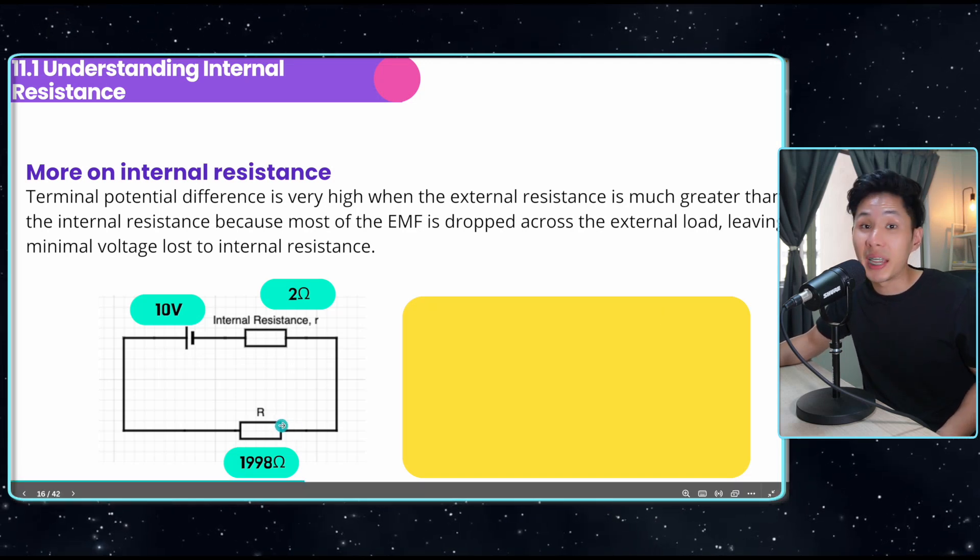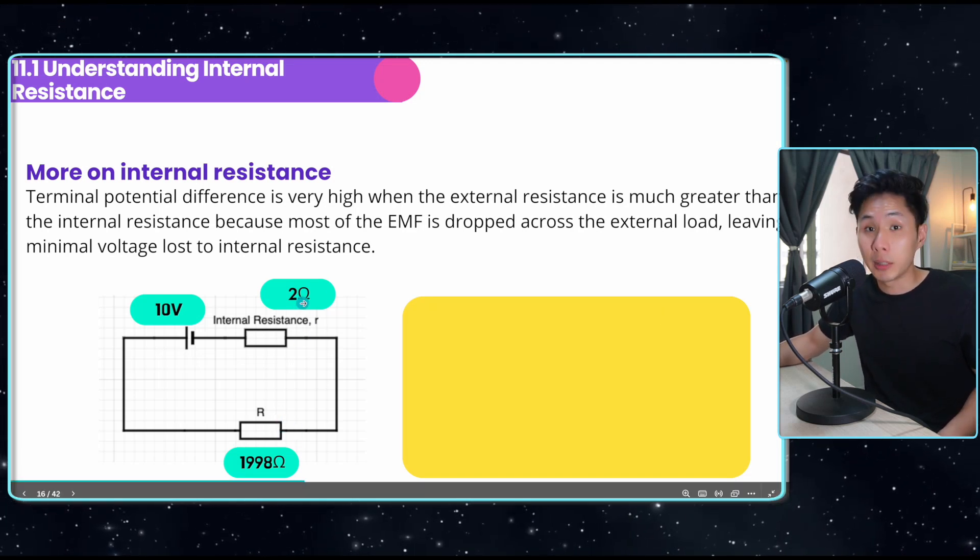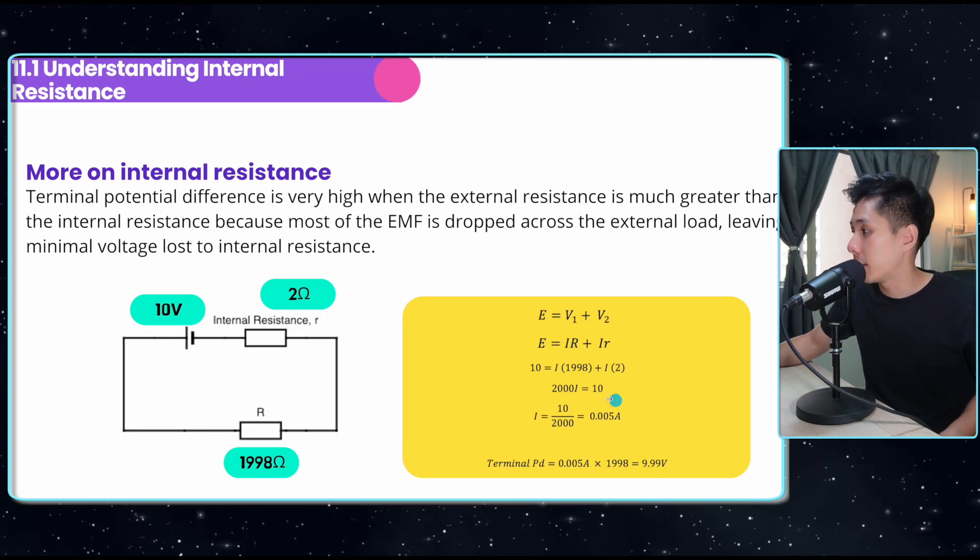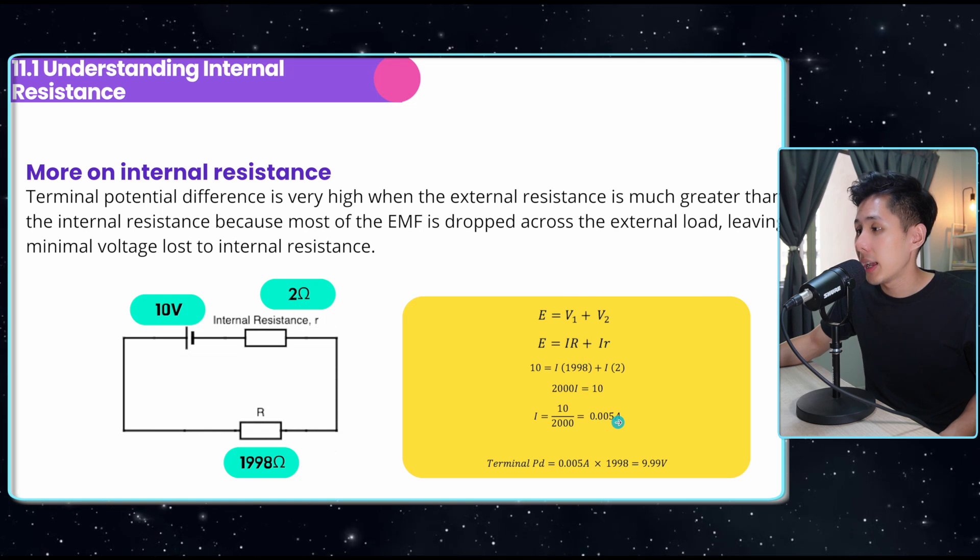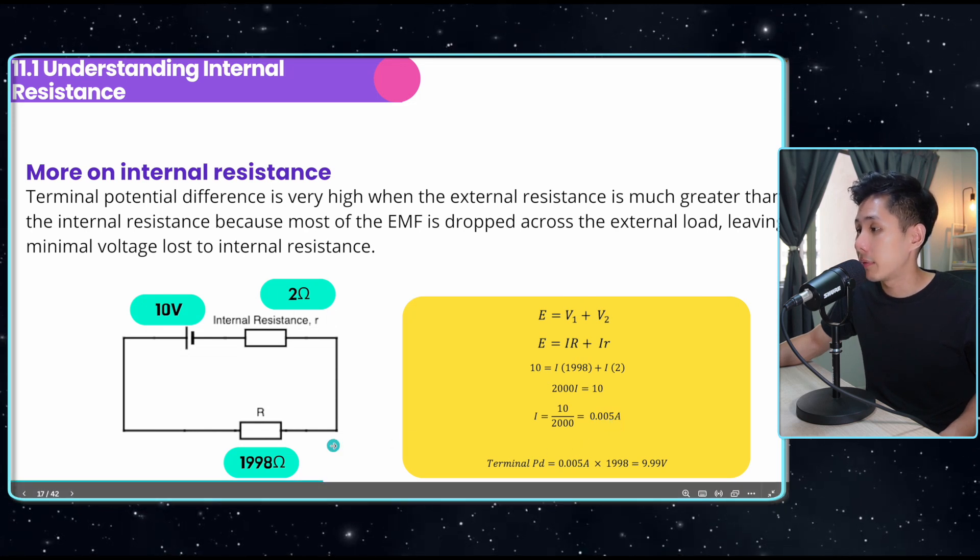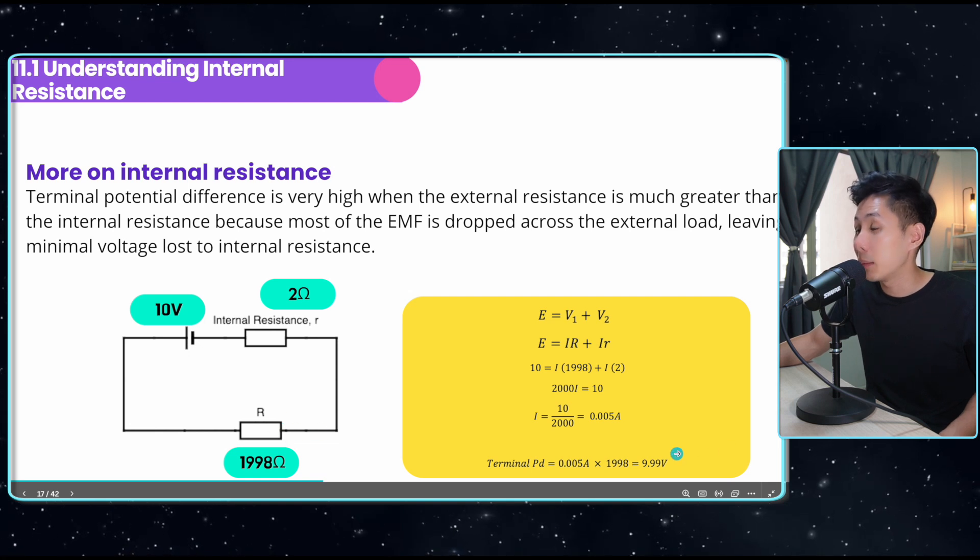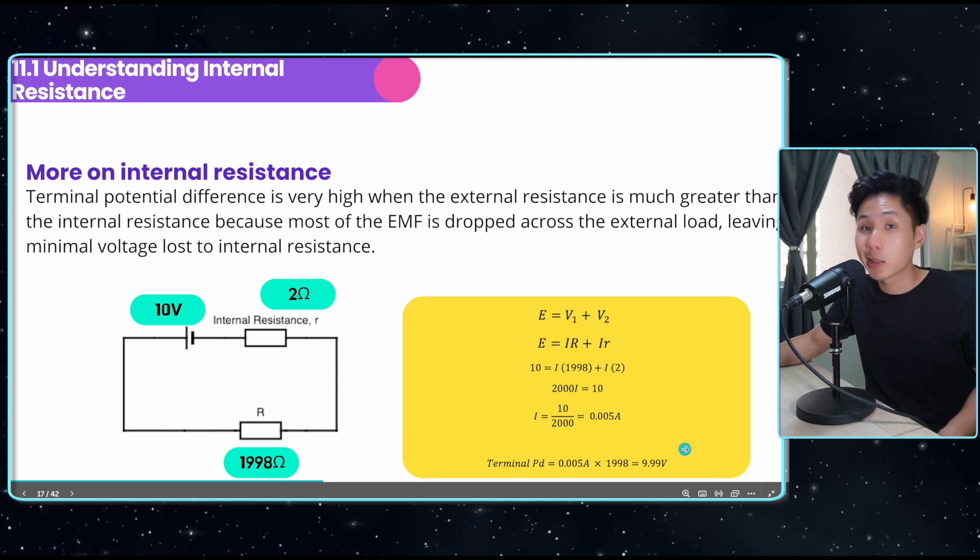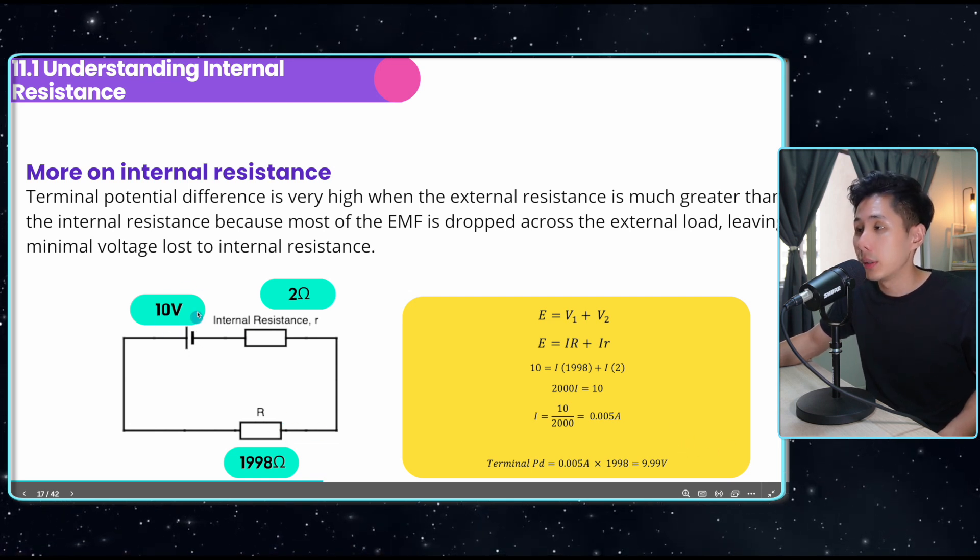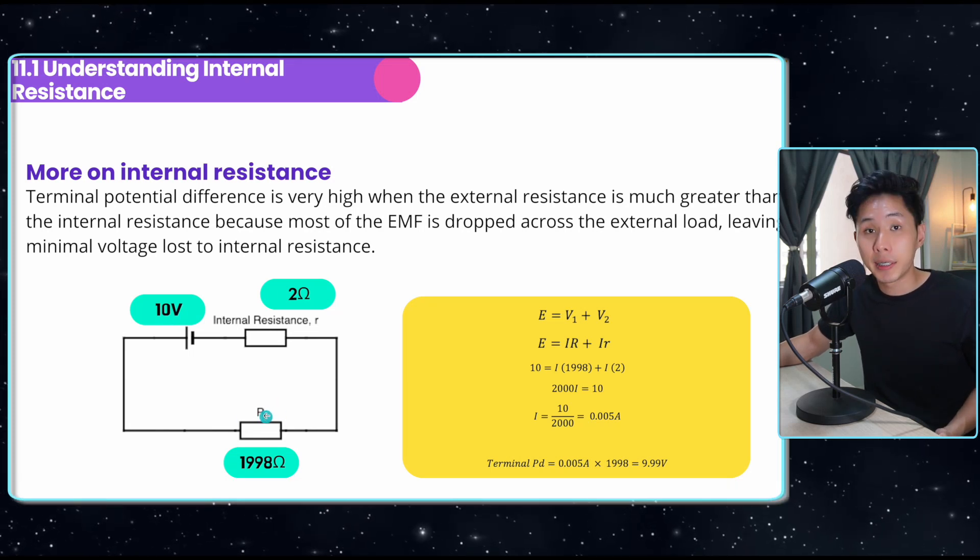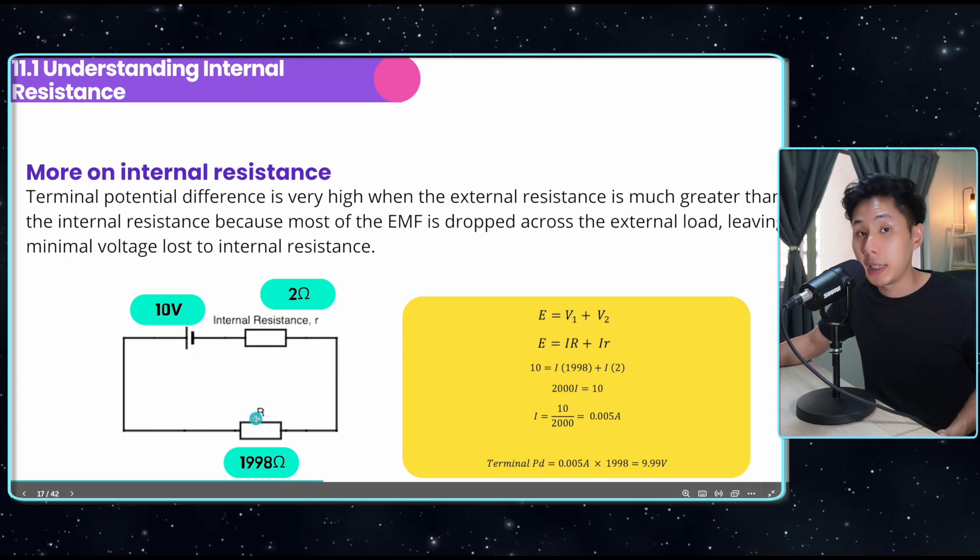This is an extreme example here. This resistance is 1998 ohms, the internal is only 2. If you apply the equation to find the current, you'll find the current is 0.005. When you multiply the current with the resistance, you'll find the potential difference here is 9.99 volts, which is extremely close to the EMF of the cell. So this is what you can conclude: the higher the external resistance, the higher the terminal PD will be.